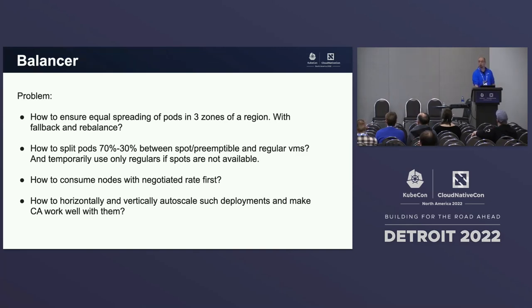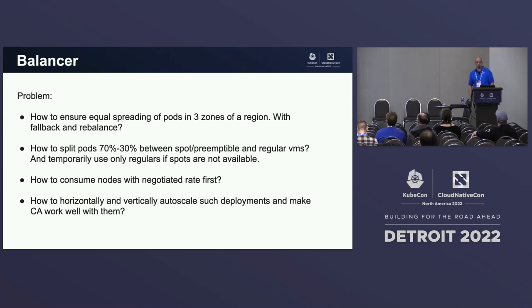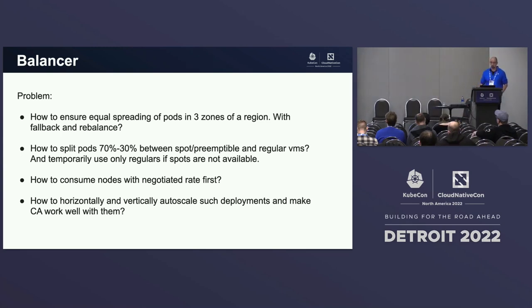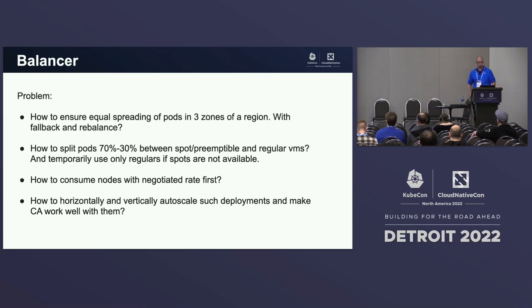Like, how to ensure more or less equal spreading of pods in three zones of a region? How to guarantee that in case of a zonal failure, pods will automatically go to the other zones and move back when the zone is back online? How to split pods, say in a 70-30 ratio, between Spot VMs and regular on-demand VMs? How to make sure pods consume nodes with negotiated rates first, and then go to others if not enough? And how to make all of these deployments horizontally and vertically autoscaled and work great with Cluster Autoscaler?